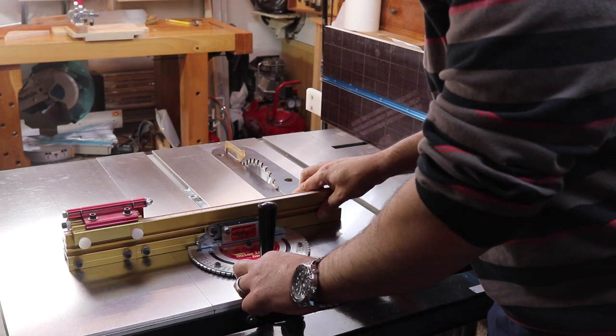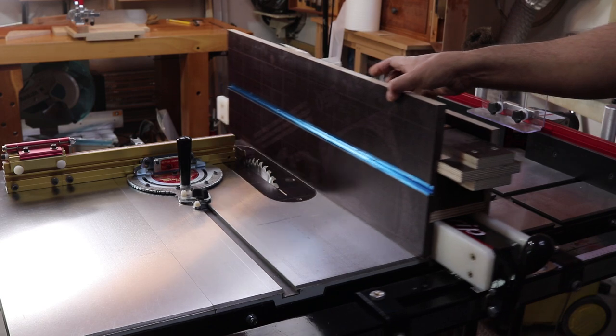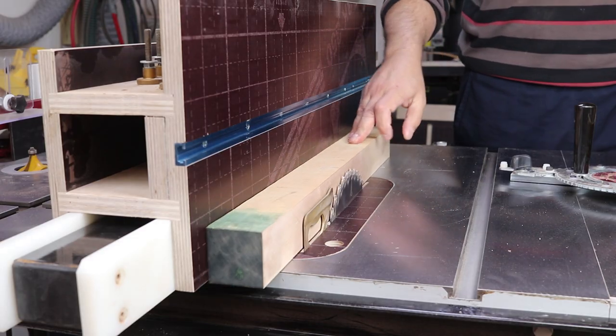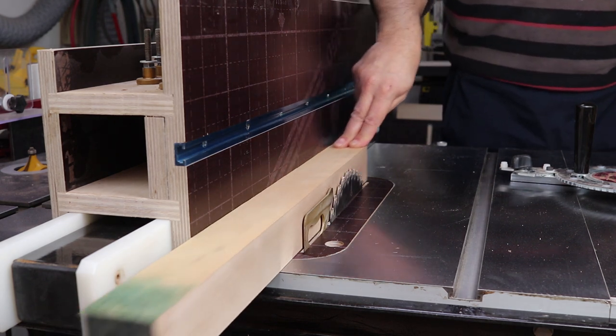As you should not make any freehand cuts on the table saw, there is a moving fence to help you cut straight along the wood and that is called rip cutting, where you will be cutting along the wood grain and parallel to the saw blade.